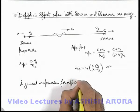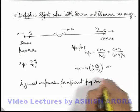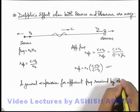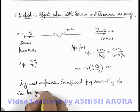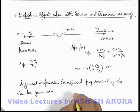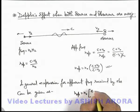So in general, expression for apparent frequency received by observer can be given as: n_apparent equals n₀ times (c ± vo) divided by (c ± vs).